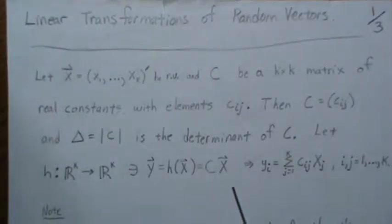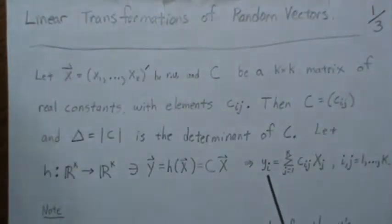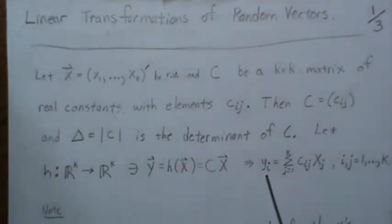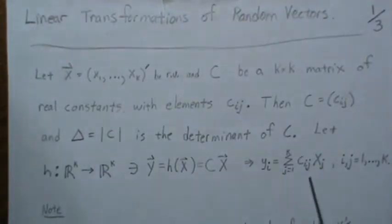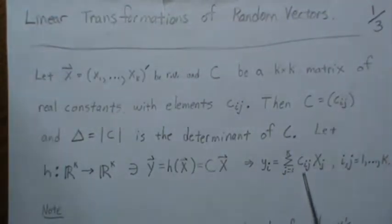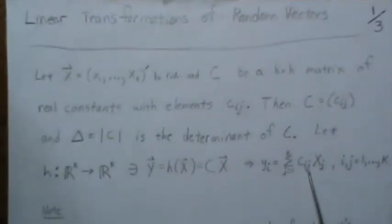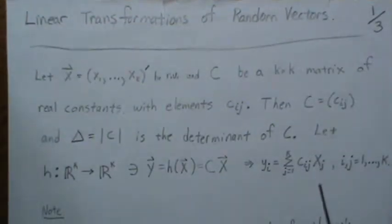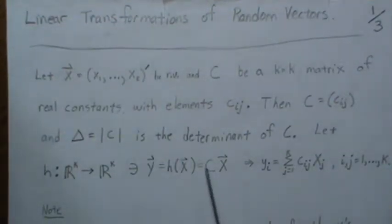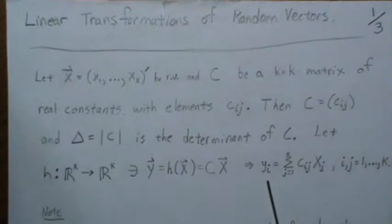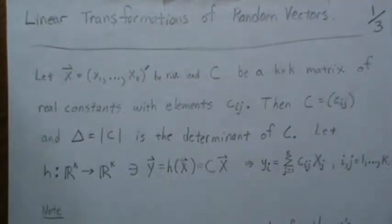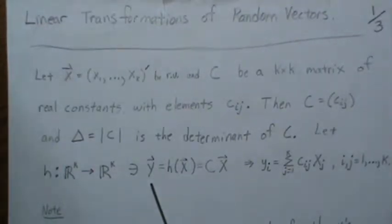I'm also going to do the notation in scalar format as well as matrix notation. Y_i represents one element of this vector, and each element of Y can be represented by this sum — take the ith row of C and sum over each column times each respective X element. That is by definition what a linear transformation of a random vector is, and our goal is to find the distribution of Y.